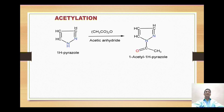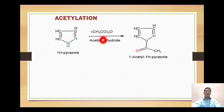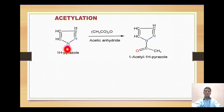The next reaction is acetylation. Pyrazole on reaction with acetic anhydride undergoes acetylation — the attachment of an acetyl group onto the nitrogen. The nitrogen, being basic, attacks the carbonyl carbon of acetic anhydride, releasing one molecule of acetic acid, and the COCH3 group becomes attached to the nitrogen. The reaction involved is nucleophilic acyl substitution.